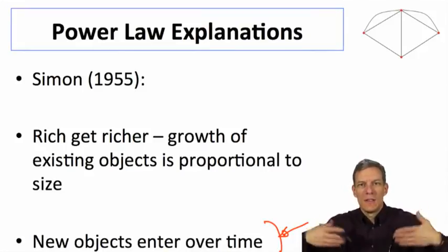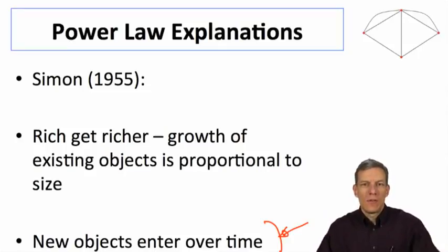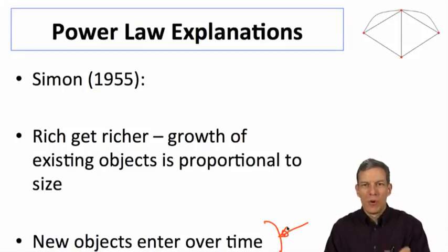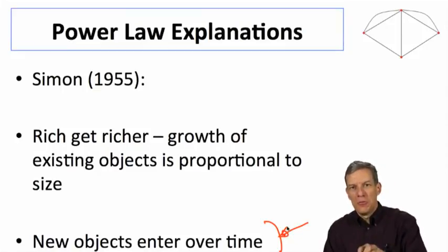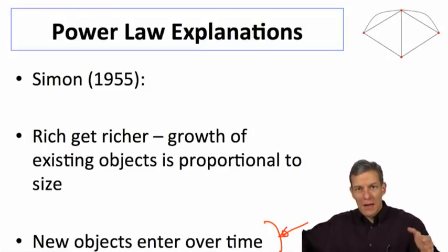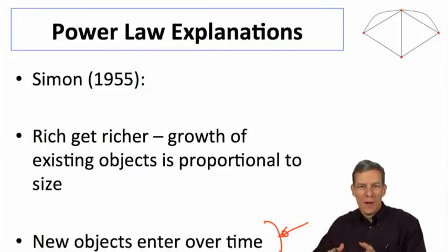The more wealth you get, the easier it is to get more wealth. The bigger your city is, the easier it is to get more population. These kinds of things where you get a multiplicative growth together with new objects being born over time—new articles, new cities, in this case new nodes—those things being born over time are going to gain proportionally to how large they already are and we'll end up with power laws.